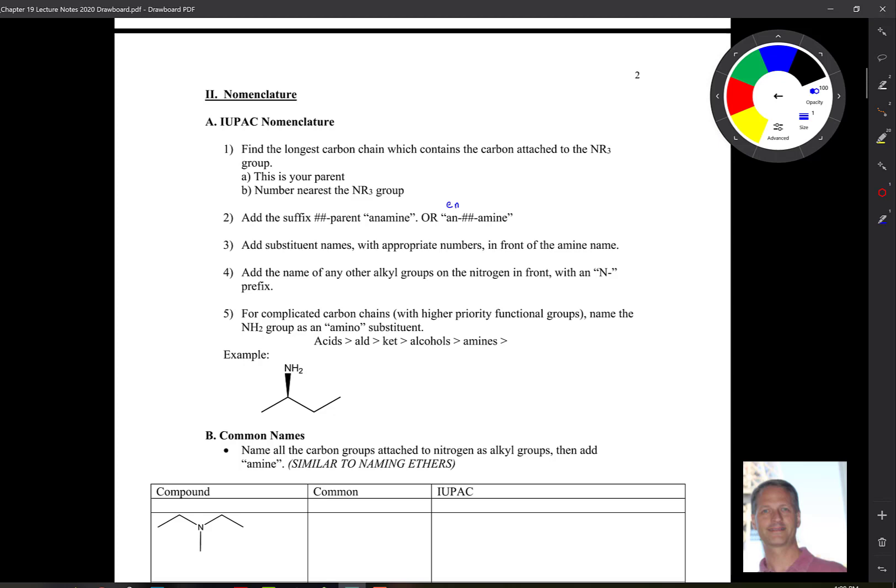Then we add the name of other alkyl groups, for example, the nitrogen, and we do that by saying that they're N-substituted, so N-methyl if there's a methyl group sticking off of it. And then for complicated carbon chains, that is for molecules that have higher priority functional groups such as carboxylic acids, we name the NH2 group as an amino substituent. So let's look at this example here down below.